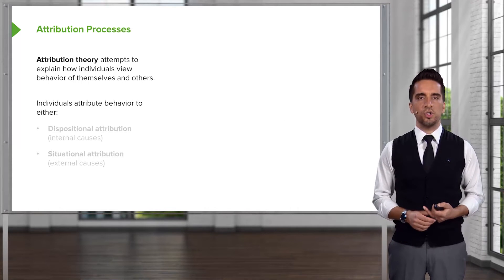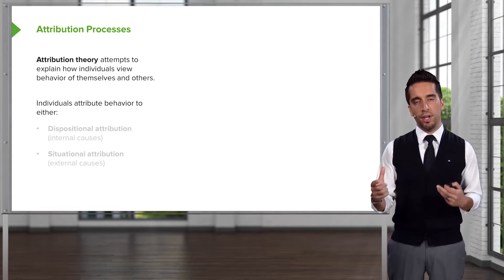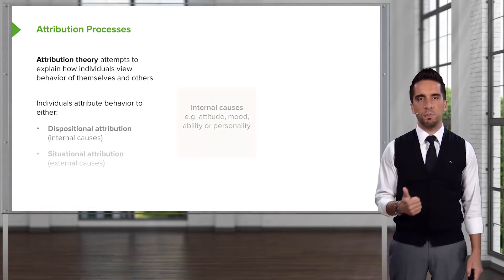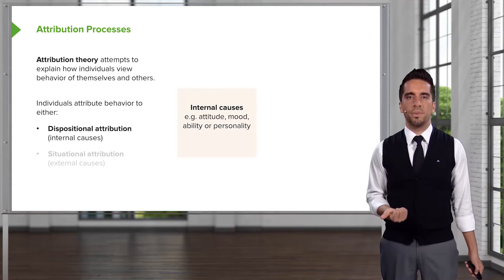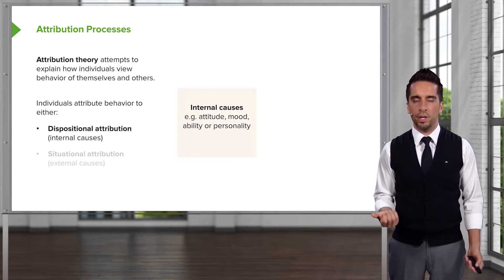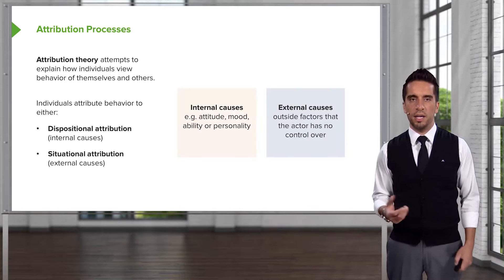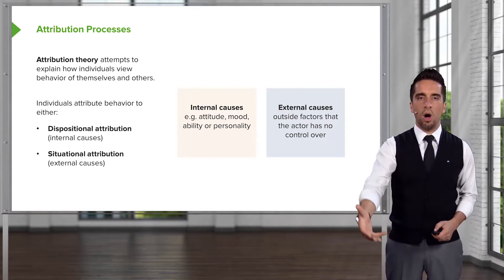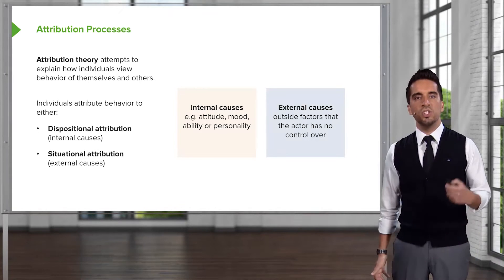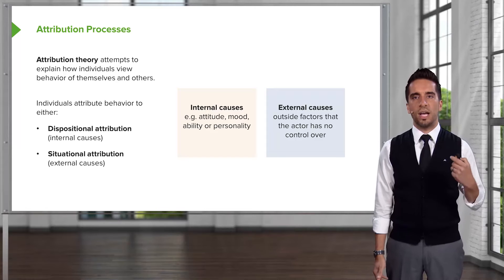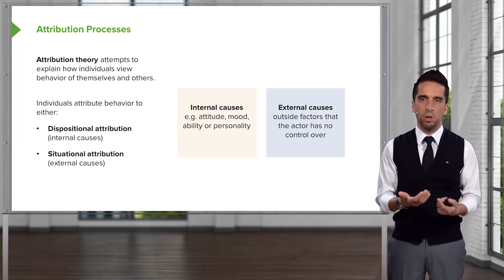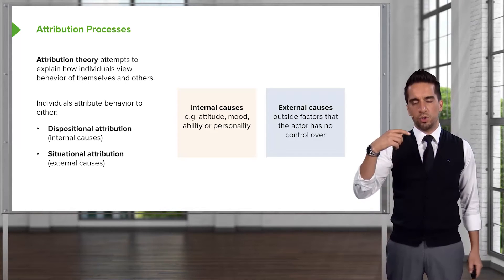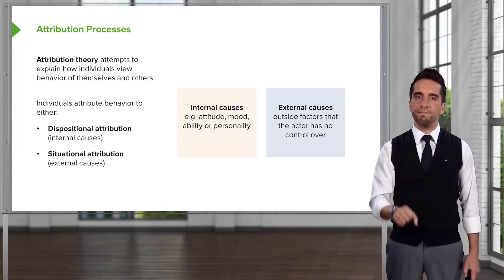Individuals attribute behavior to two things. First, dispositional attribution, which is internal causes — things like attitude, mood, ability, or personality. And then there are external causes, which we call situational attribution. This refers to outside factors that the actor really has no control over. In sociology, we often use the term 'actor' to refer to an individual.